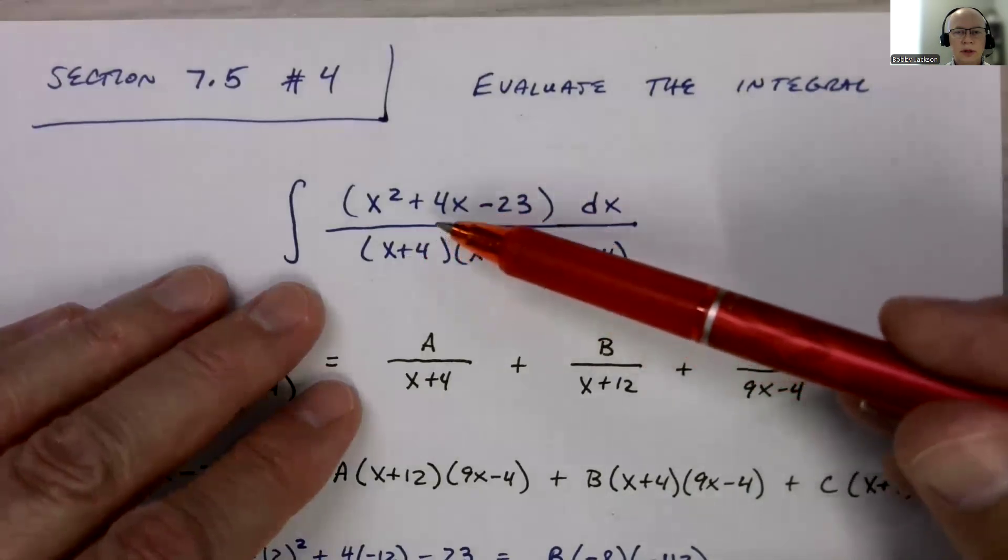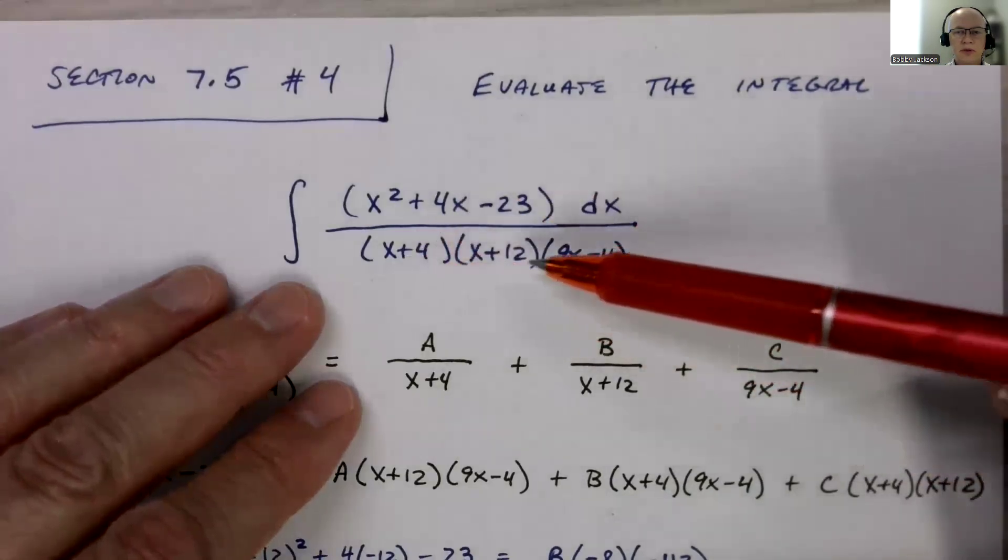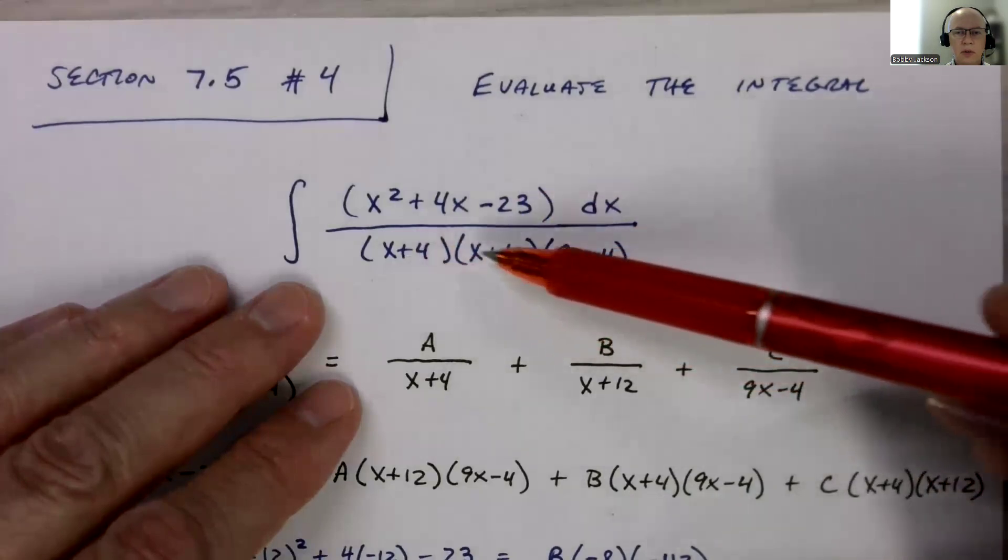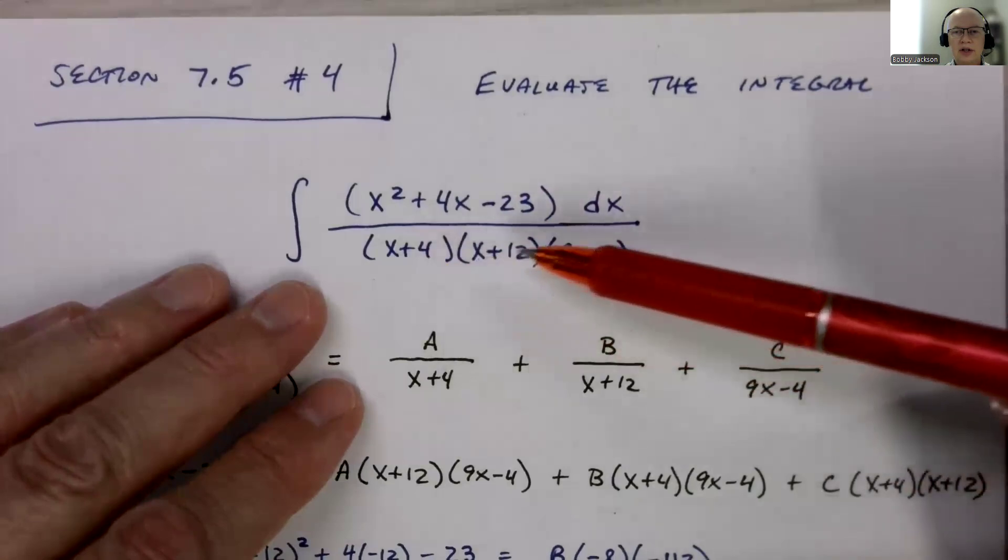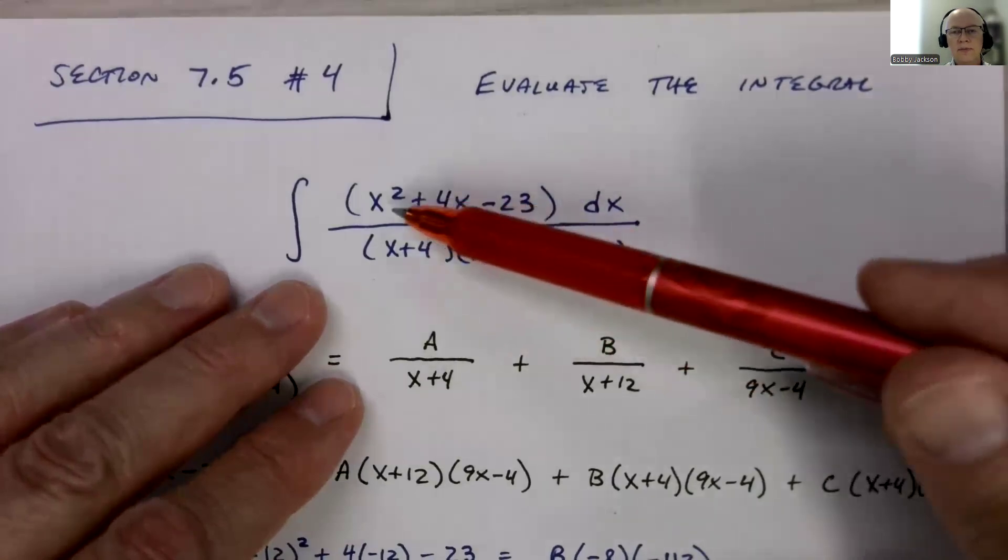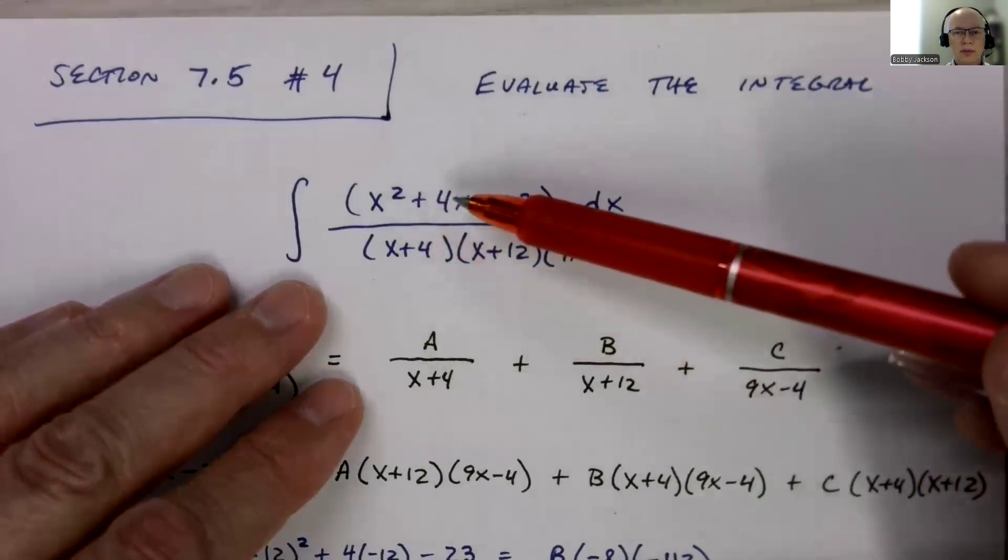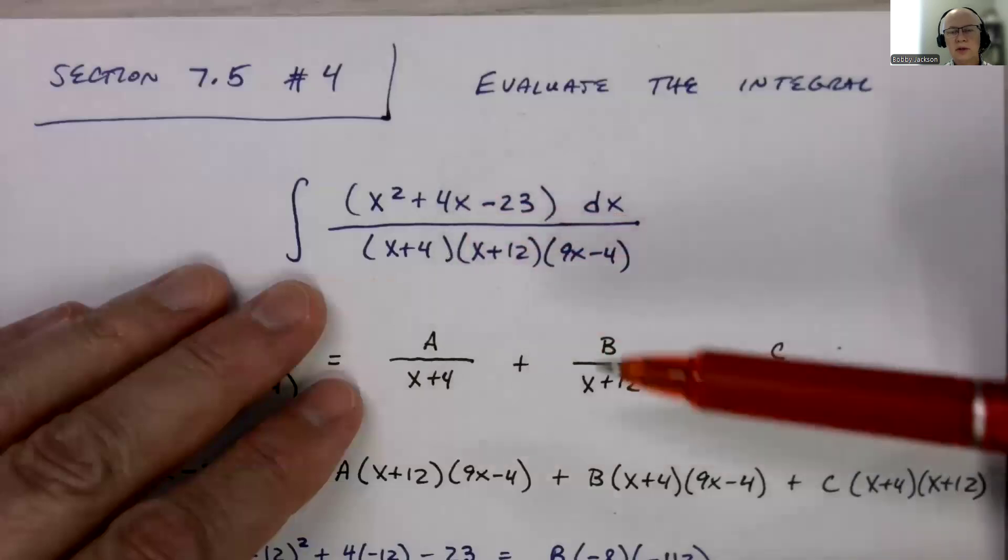Notice a couple things. The denominator here has been factored for us. If I were to multiply this all out, the highest degree term would be 9x cubed. So we have a cubic down here and a second degree polynomial up top, so the degree of the top is less than the degree of the bottom.